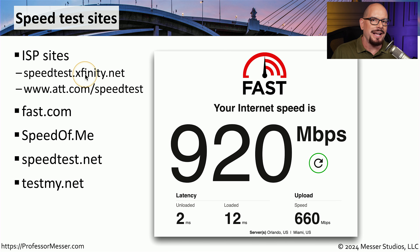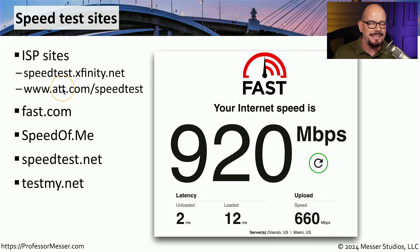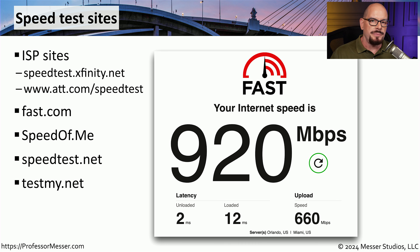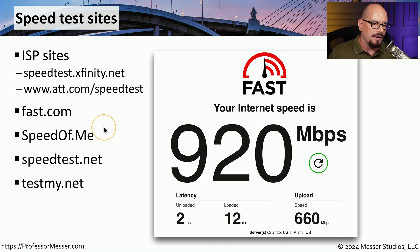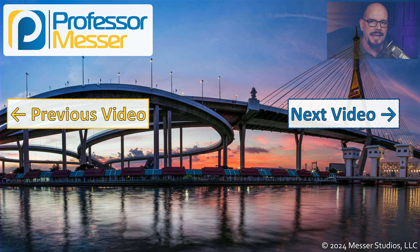So if you're running on an Xfinity network, you might want to use the Xfinity speed test site, and if you're on an AT&T network, you might want to use AT&T speed test — that way you're getting the most accurate representation of the speeds available on your local network. If you'd rather use third-party speed test sites, there are a number available on the internet. Fast.com and Speed of Me are very good choices, along with speedtest.net and testmy.net.